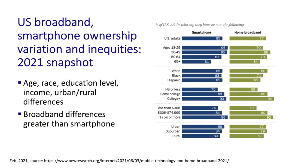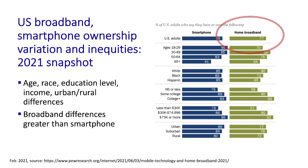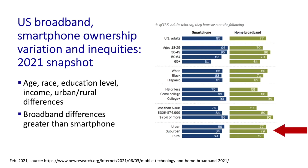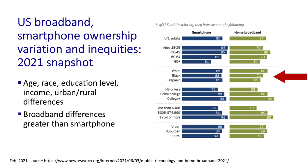What I'd like to do next is explore these gaps — sometimes called the digital divide — in more depth here in the United States. Here's 2021 data from the Pew Research Center about disparities in access to smartphones and home broadband in the United States on the basis of age, race, education, income, and urban-rural living. Let's focus on broadband access and note the differences on the basis of income, educational attainment, urban-rural differences, and race.